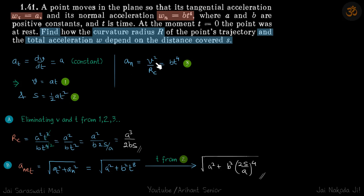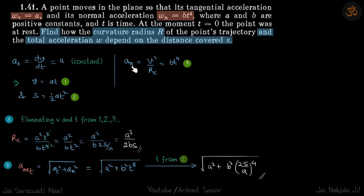Normal acceleration is given as v²/r, which equals bt⁴. So now we have three equations and three unknowns: v, t, and radius of curvature rc. The standard equation here is that radius of curvature rc = v²/aₙ, where aₙ is the normal (perpendicular) acceleration, so aₙ = v²/rc.